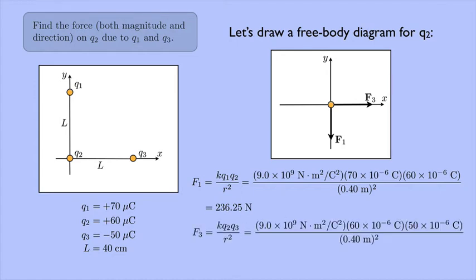I can do the same thing for F3. This time it's going to be KQ2Q3 over R squared. K is the same. Q2 is 60 times 10 to the negative 6. And Q3 is negative 50 microcoulombs. But since I'm only dealing with magnitudes here, I'm going to leave out the negative and just make it 50 times 10 to the negative 6 Coulombs.